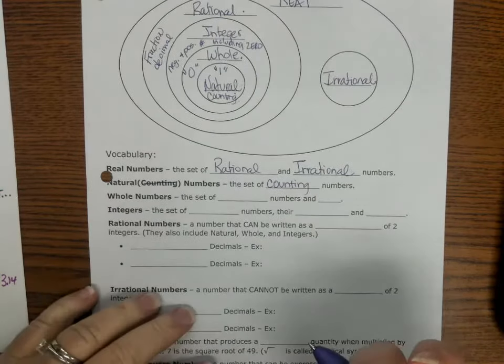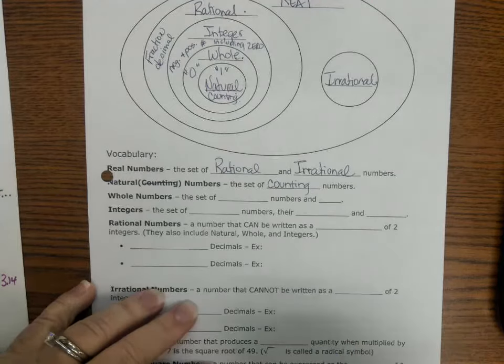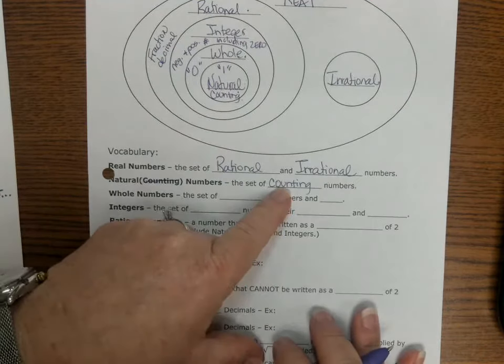So when you start to count, you didn't start counting with zero. You counted with one. So that starts 1, 2, 3, 4.